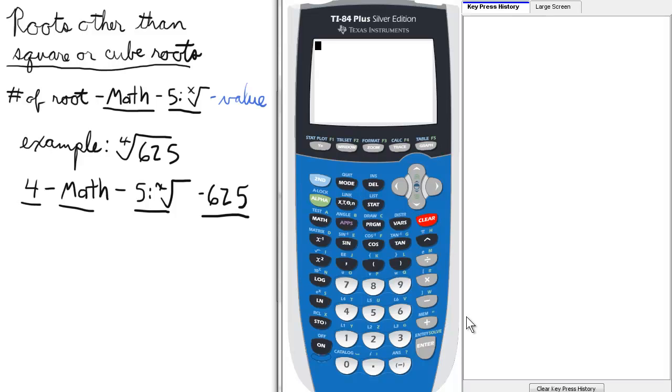In the case of the fourth root of 625, first we want to press the number equivalent to the index of the radicand. In this case it's 4, so we press the 4 button.